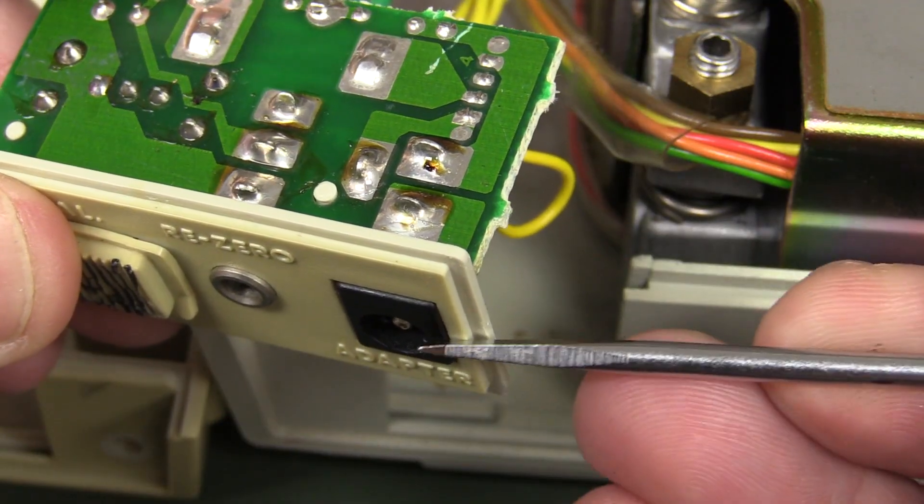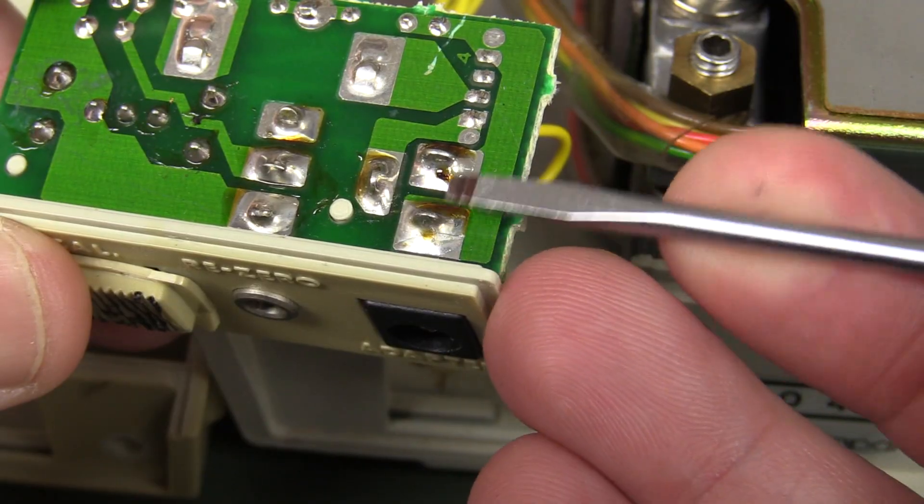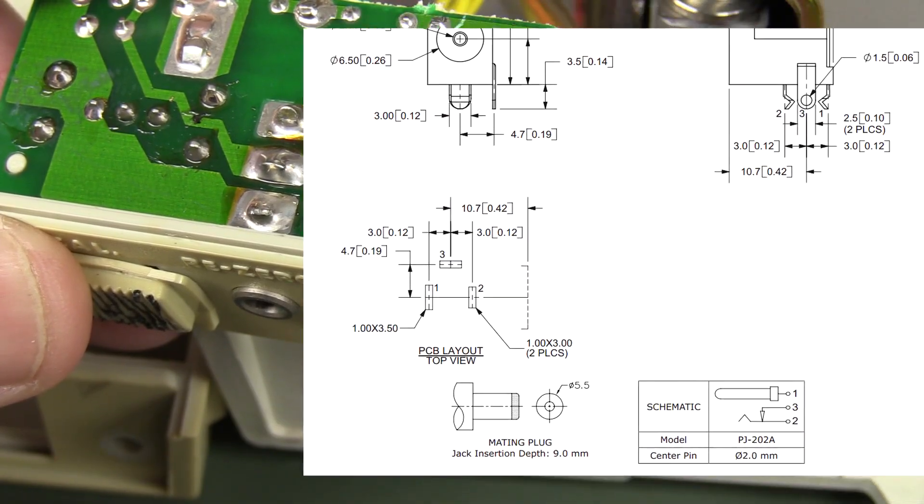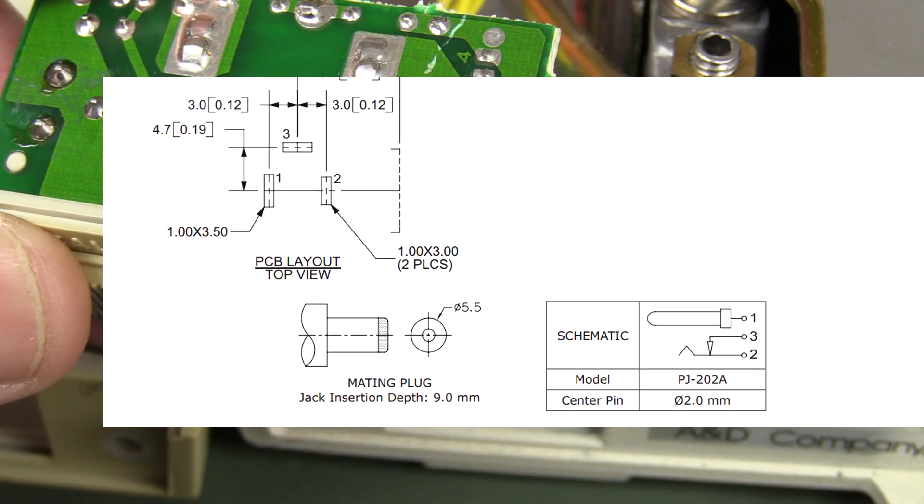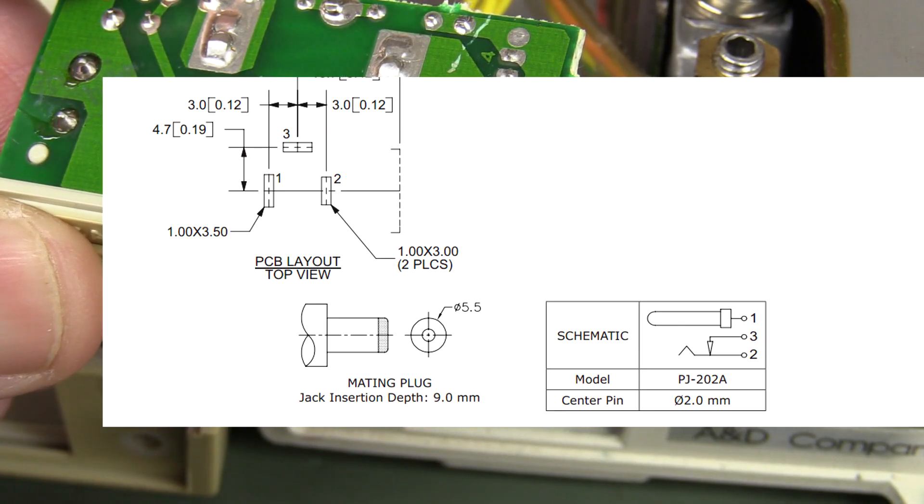Now, the first thing you'll notice about these DC barrel connectors is that they're usually three pins like this. And if you have a look at the schematic for this, you can see that it's fairly descriptive of how it operates. There's three separate contacts in there, and one of them is effectively a switch.